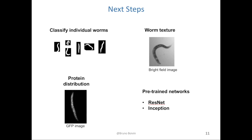Modern microscopes also permit different light wavelengths to be acquired on different channels. For this experiment, the Broad also made available a GFP channel where we can see the distribution of a biologically tagged protein in the worm's body, so there could be information there to help determine the health state of the worm. Finally, pre-trained and deeper network architectures could be evaluated to see if we can improve generalizability of the model to new datasets.